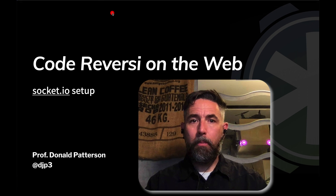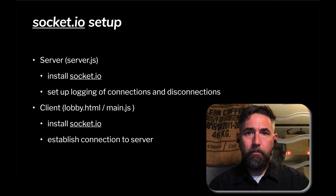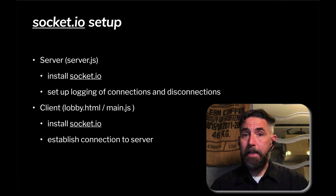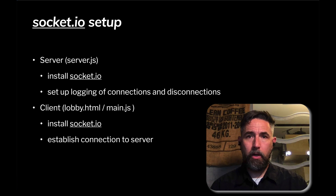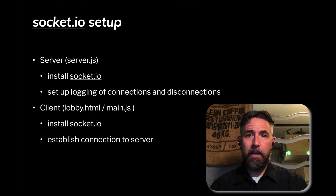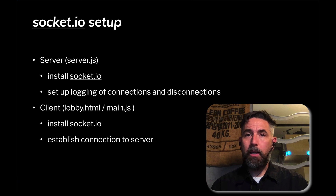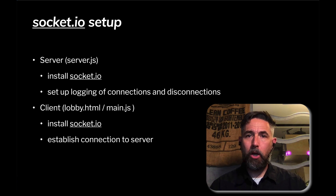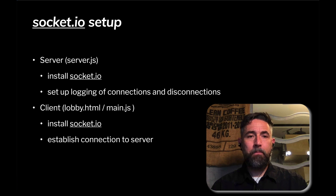The setup consists of a handful of different parts. On the server side in server.js, we need to install socket.io — a little work on the command line and in the code itself — then add logging of connections and disconnections. On the client side in lobby.html and main.js, we'll install socket.io and establish a connection from the client to the server.